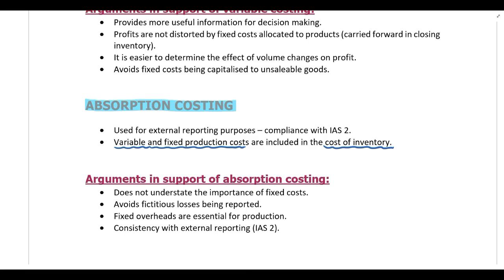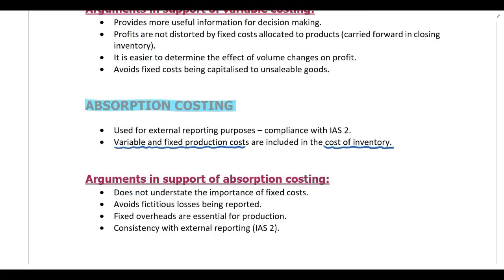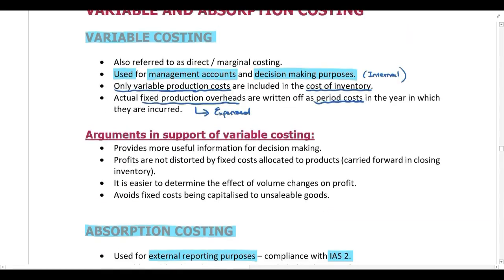Why do we have two different statements? Variable costing is used for internal purposes — for management accounts and decision-making. Absorption costing, on the other hand, is used for external reporting purposes because it complies with IAS 2. So if you are required to prepare annual financial statements for external use, you use absorption costing.